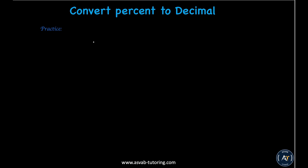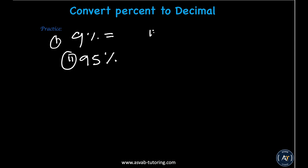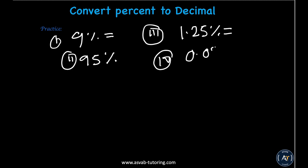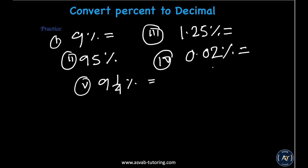Now let's do a few practice problems. Number one: what is 9% as a decimal? Number two: 95% as a decimal. Number three: 1.25% as a decimal. Number four: 0.02% as a decimal.